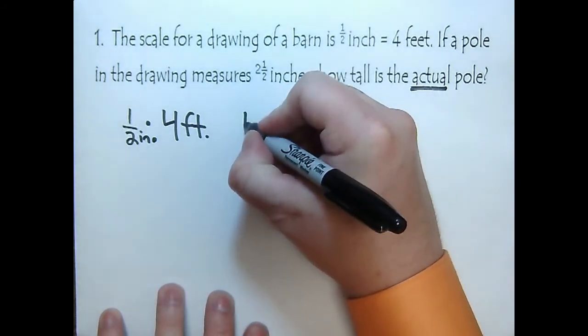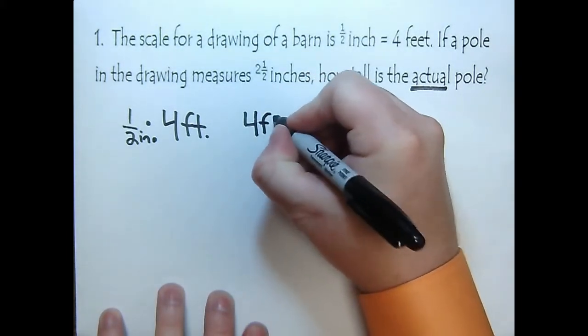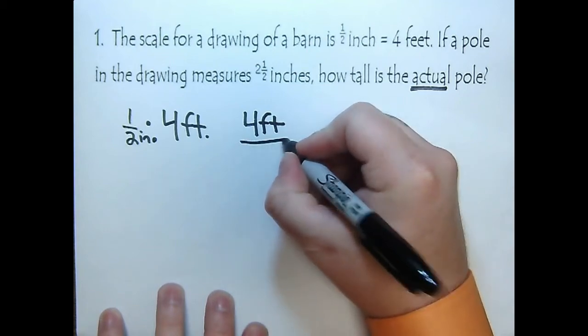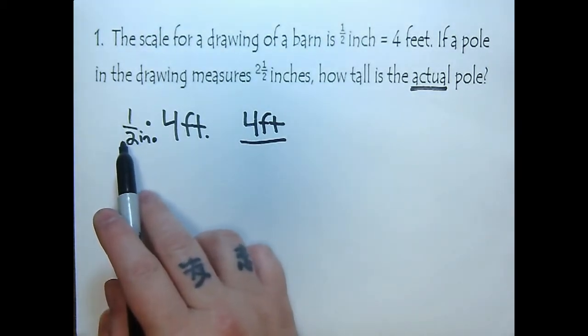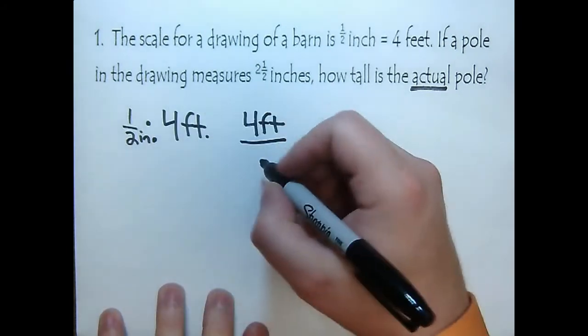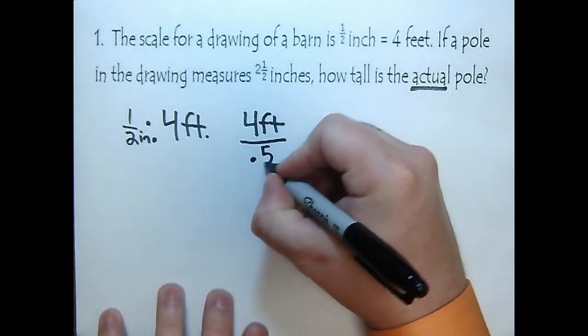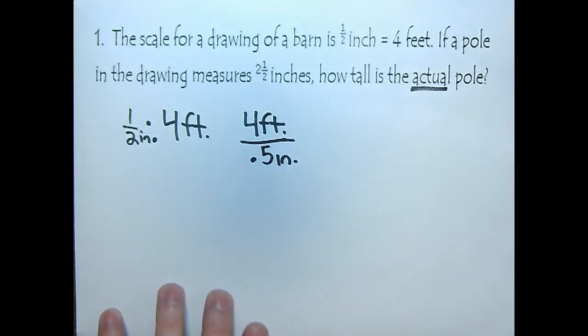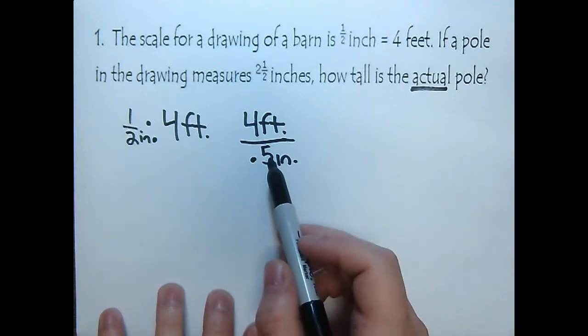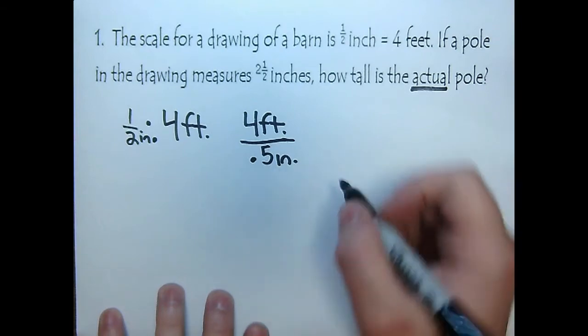So I put my actual size, four feet, and I'm going to put that over one half of an inch. I'm going to turn this one half into a decimal. So one half I know is 0.5 inches. So now I have four feet over 0.5 inches, and now to turn it into a unit rate, we know that unit rate is a special kind of ratio where the denominator is one.